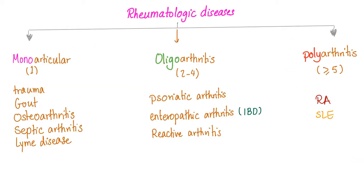Based on the number of joints inflamed, we can divide rheumatological diseases into monoarthritis, oligoarthritis, and polyarthritis. Mono means one joint. Oligo means two to four joints — oligo means few. Poly is five or more joints.